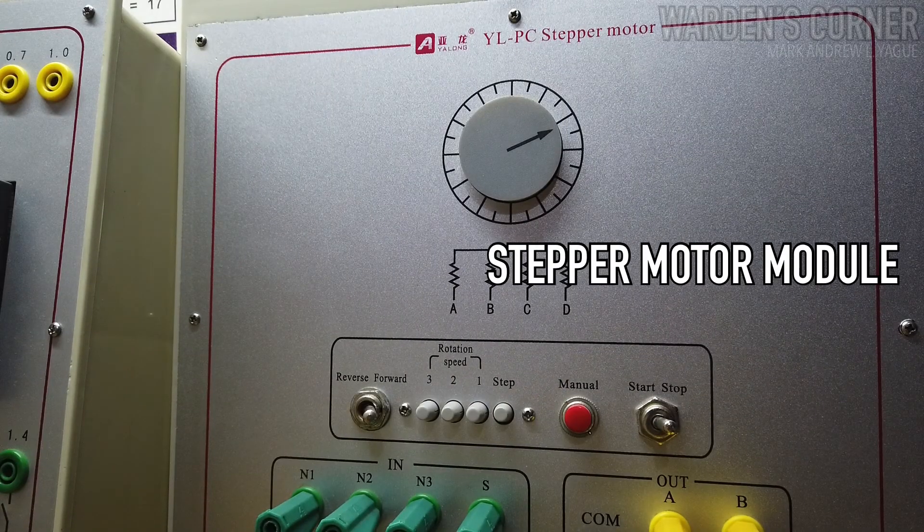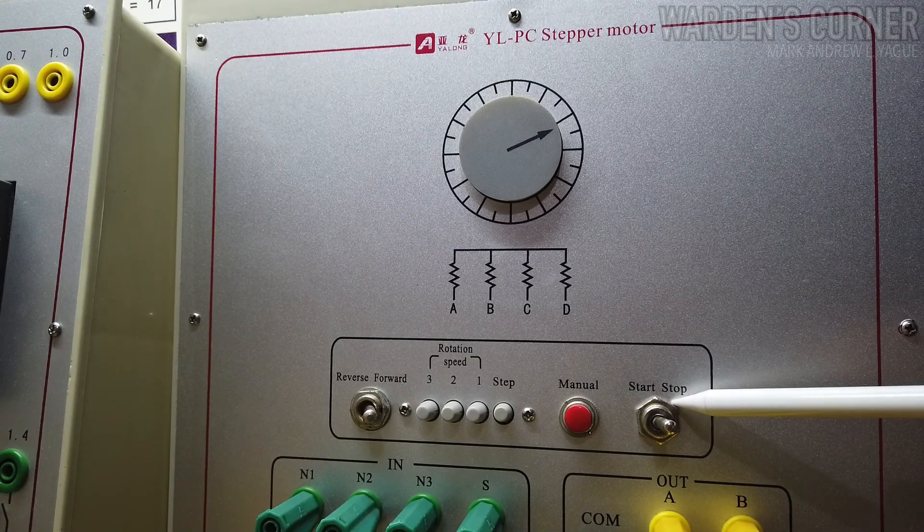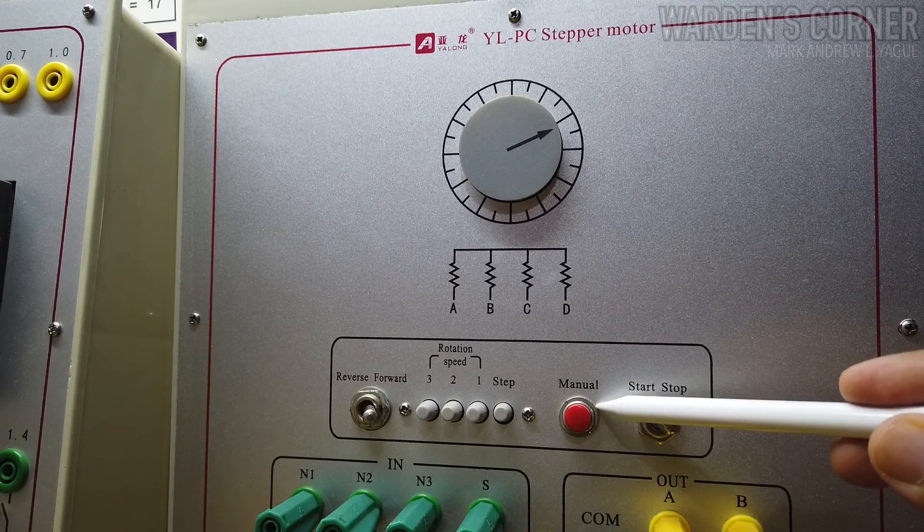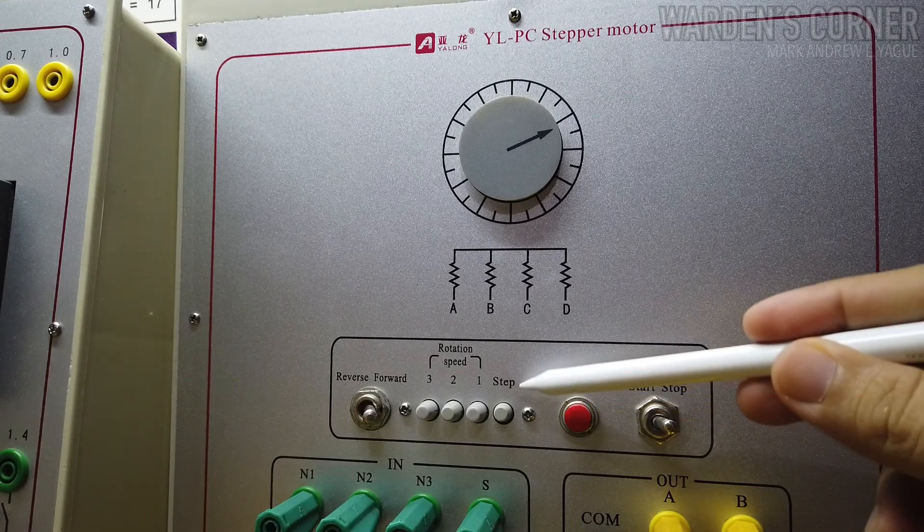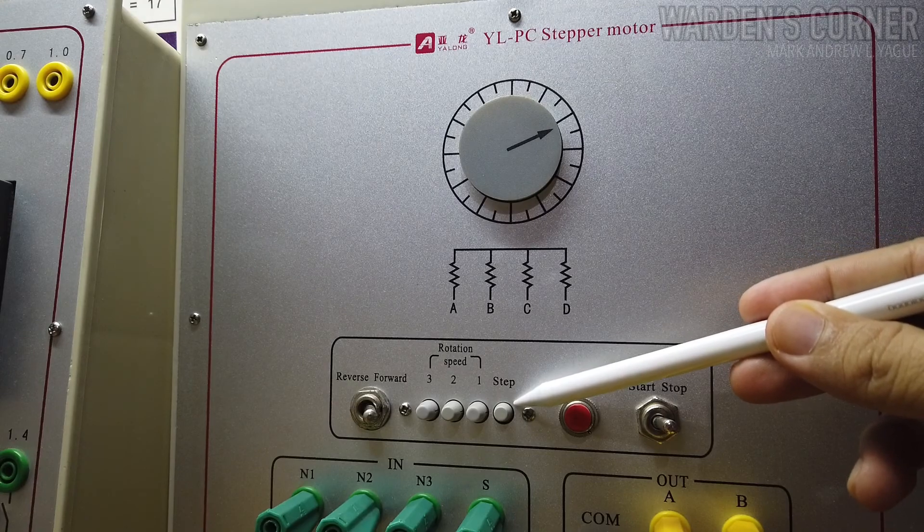Here's our stepper module. First, we need to identify its parts. This is the start-stop switch as our main controller. Manual switch which is a momentary push button. Selector switch that will act as our speed controller and manual selection.